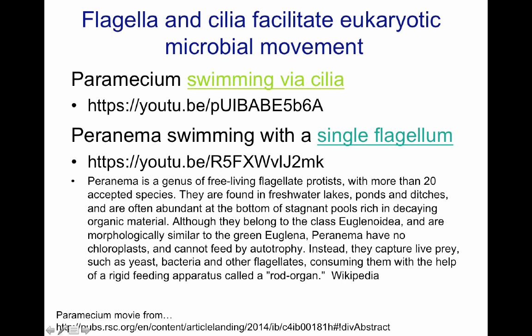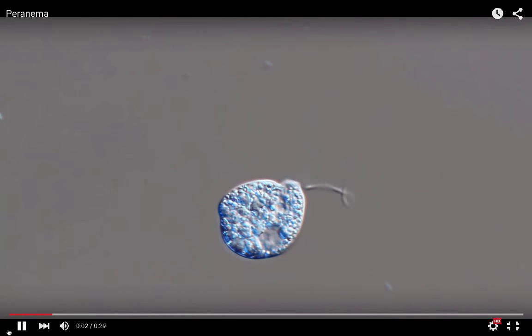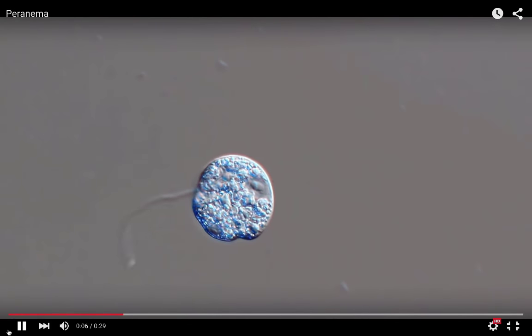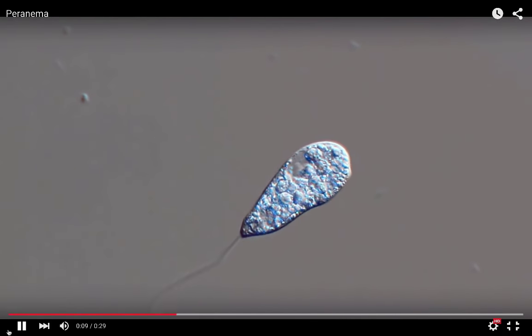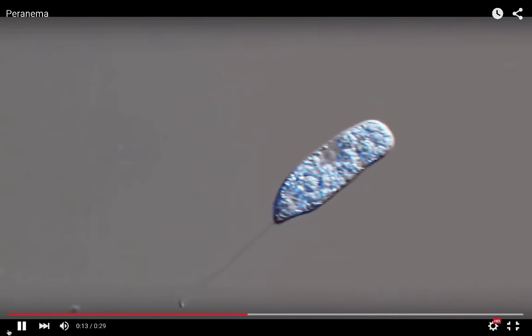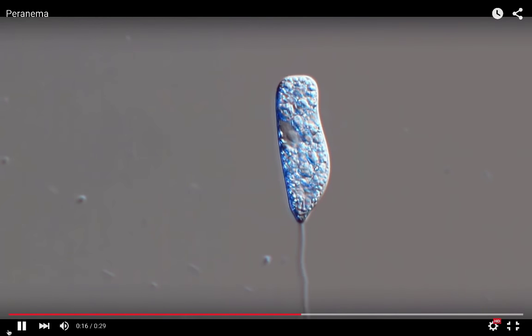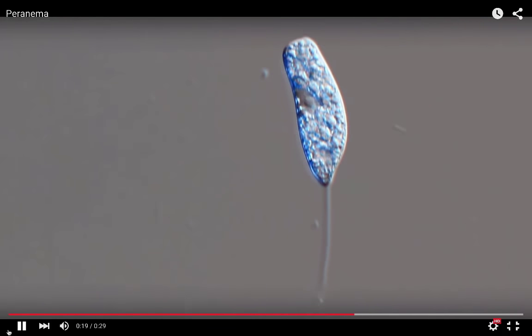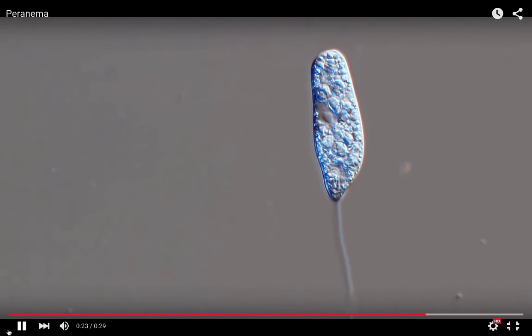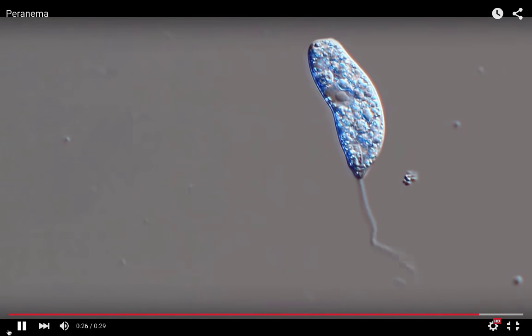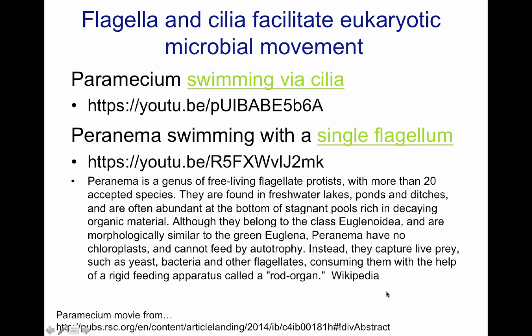In the next movie, I'm going to show you an example of Paranema. Paranemas are free-living flagellate protists that have a single flagellum. They are related to the protist Euglena. Here is a movie of Paranema. It has a single flagellum that is beating in order for it to move. It can move in the direction of the flagellum or use it to propel itself. This is a hunter microorganism and it doesn't have chloroplasts like Euglena, which is its most related cousin.